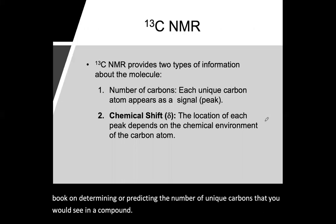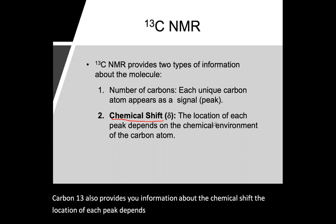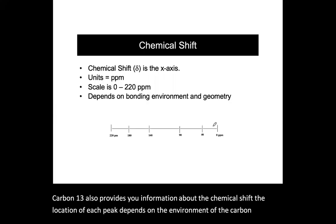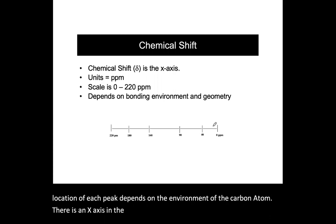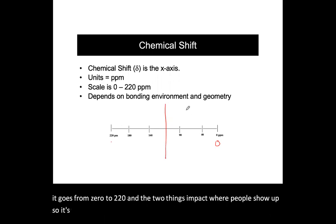So carbon-13 also provides you information about the chemical shift. The location of each peak depends on the environment of the carbon atom. There's an x-axis in the carbon-13 NMR and the x-axis is the frequency and it goes from zero to 220. And the two things impact where a peak will show up.